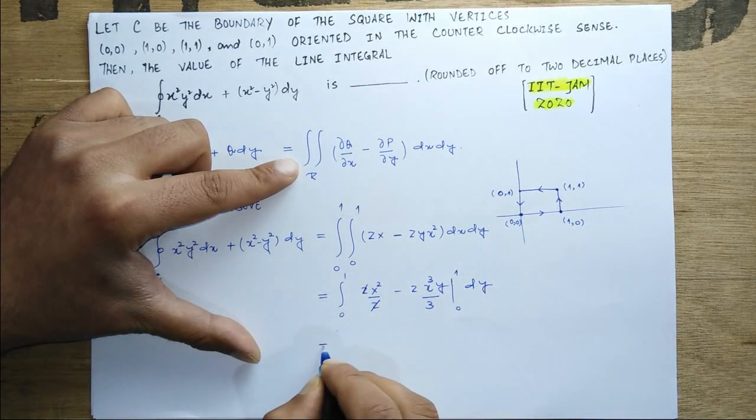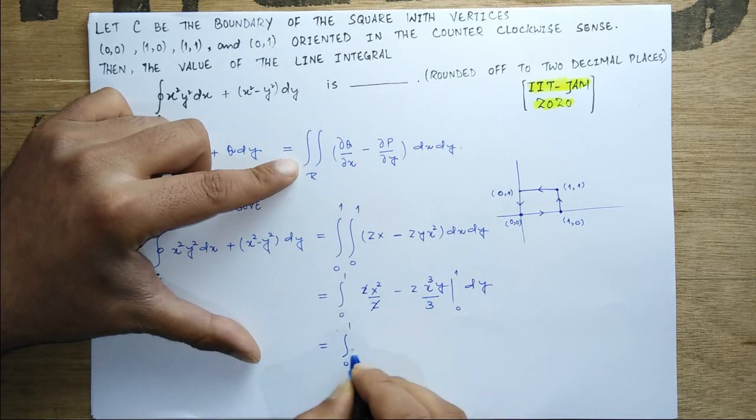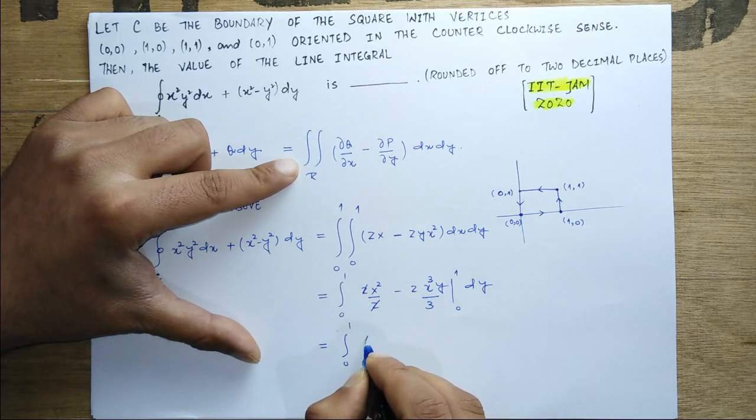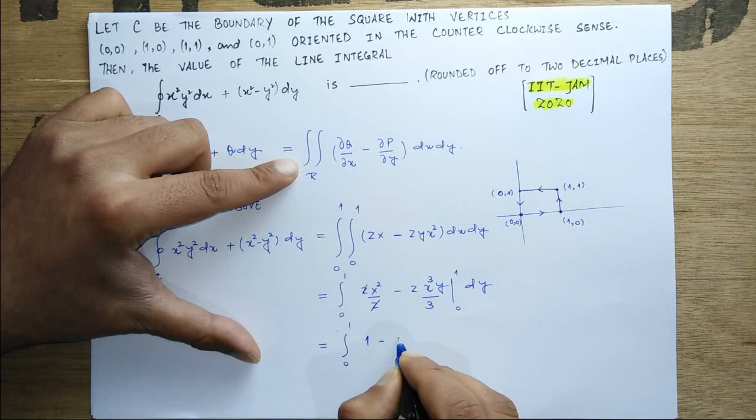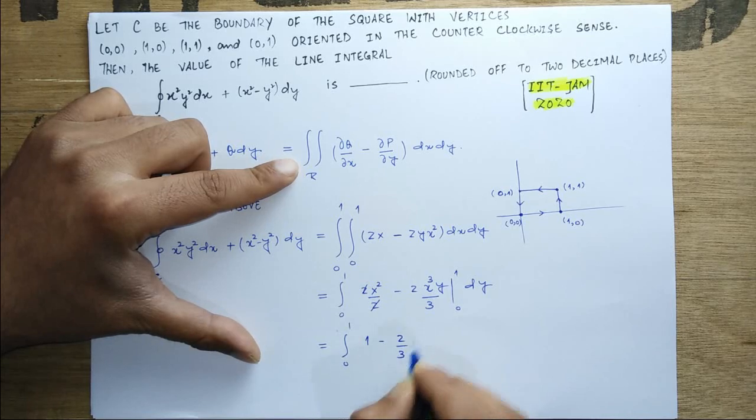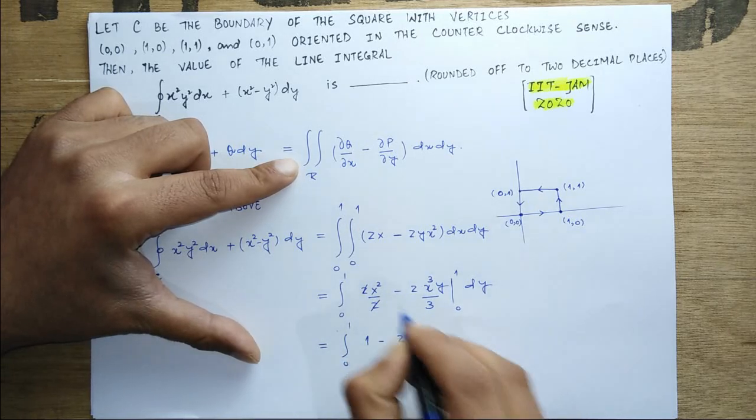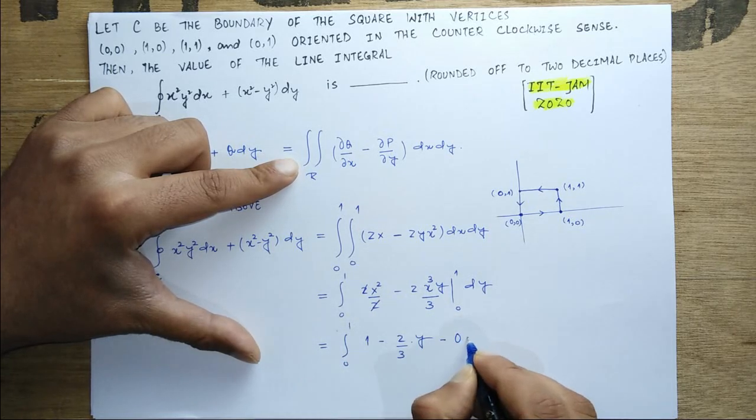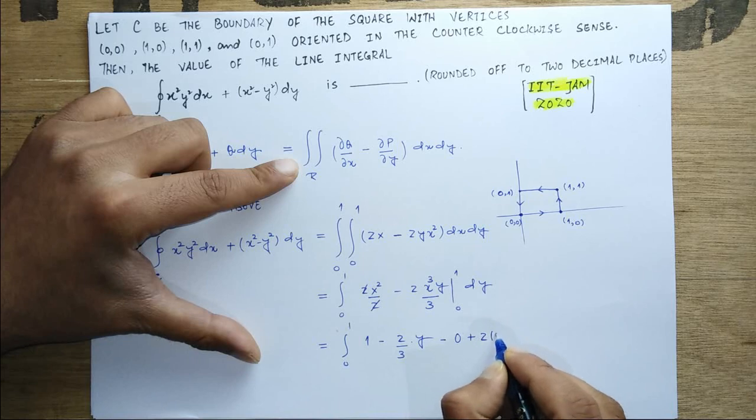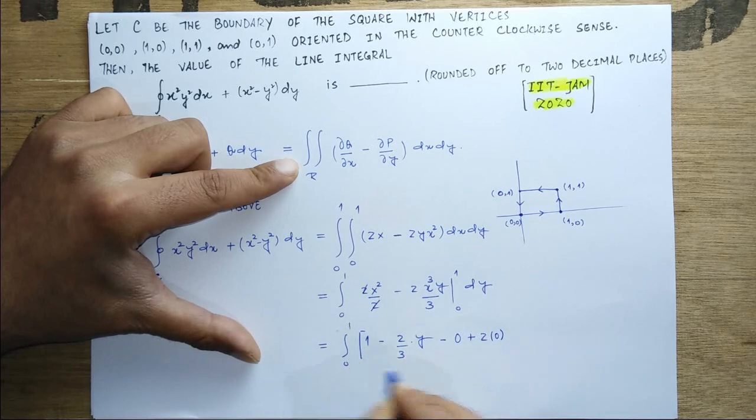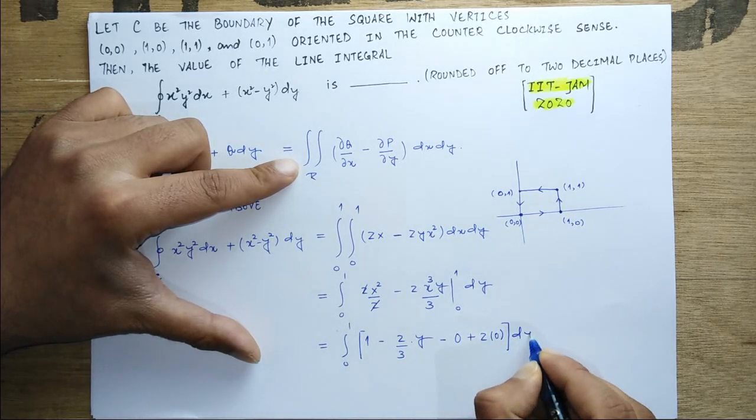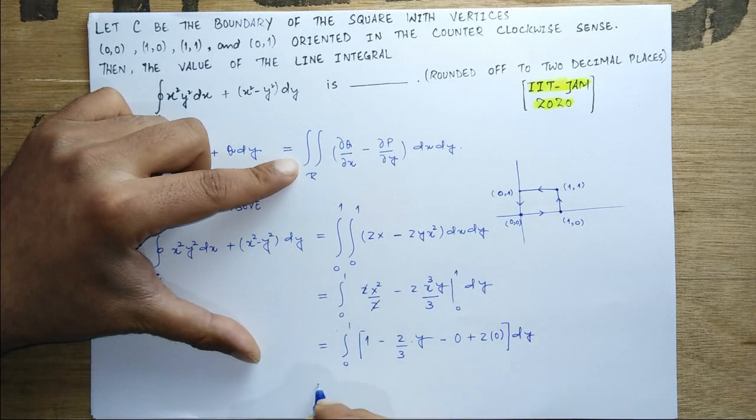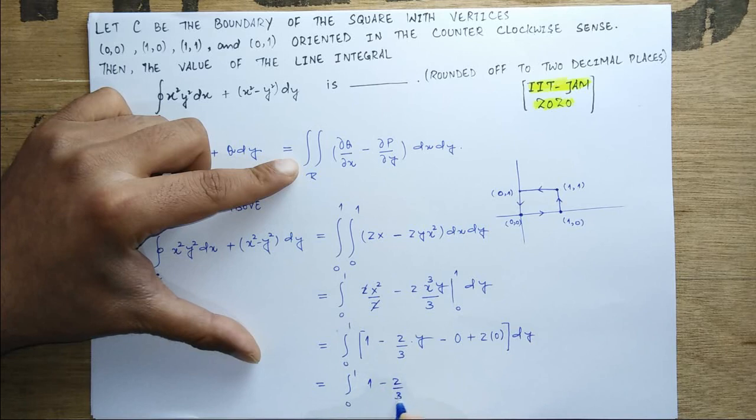Let's take this 0 to 1. We will get integral from 0 to 1, applying the limits will be 1² minus 2/3 times 1 times y, minus 0 plus 2 times 0, and then dy. So you are left with integral from 0 to 1 of (1 - 2/3 y) dy.